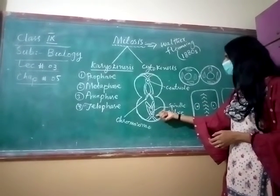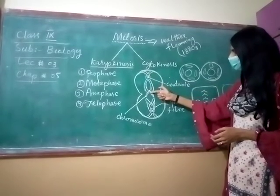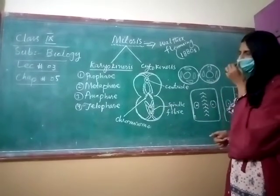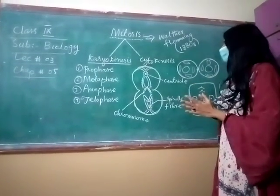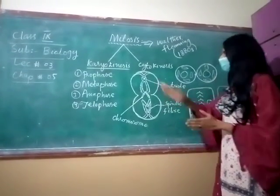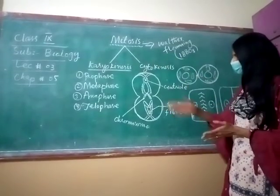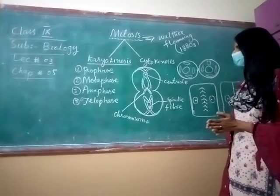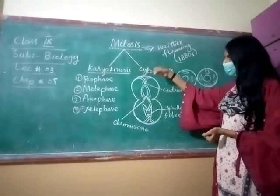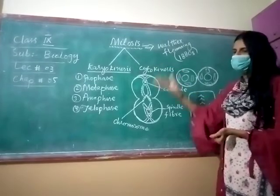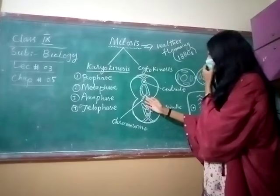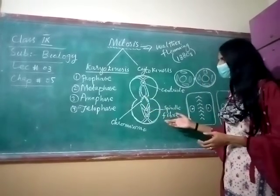The spindle fibers arrange the chromosomes. They hold themselves, then grow and pull each other. They push to the poles. There are also spindle fibers that cross and move. So these are chromosomes which are arranged along the spindle fibers.